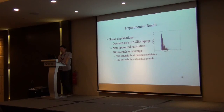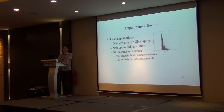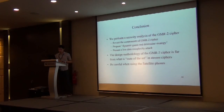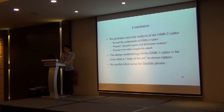The experiment uses an optimized realization, and the result can be made better with further optimization. The session key can be recovered in about 700 seconds on average: about 580 seconds for reducing the candidates — since in this phase we solve equations, the time is more than in the second phase — and about 128 seconds for exhaustive search. We performed a separate analysis of the GMR2 cipher and proposed the dynamic guess-and-determine strategy. The design of the GMR2 cipher is far from state-of-the-art.